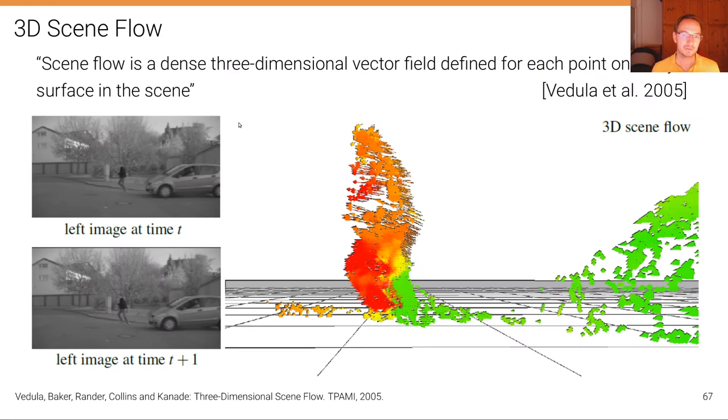One of the first papers that described the term scene flow was the one from Vedula et al. that stated scene flow is a dense three-dimensional vector field defined for each point on every surface in the scene.